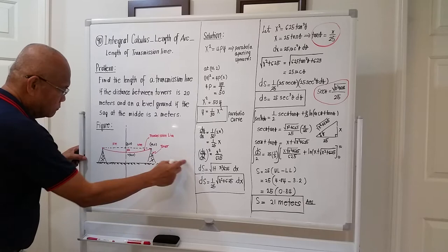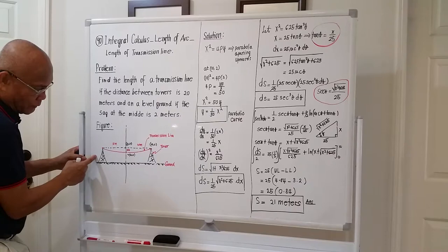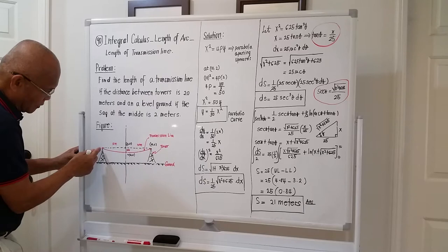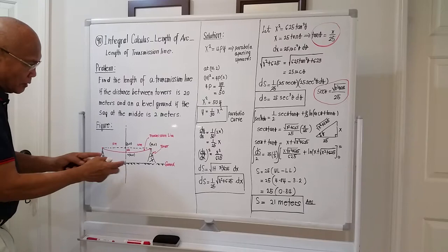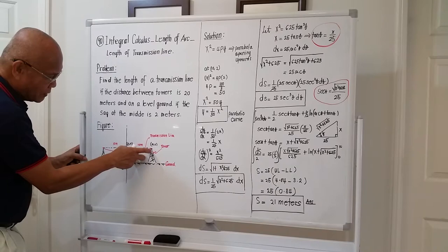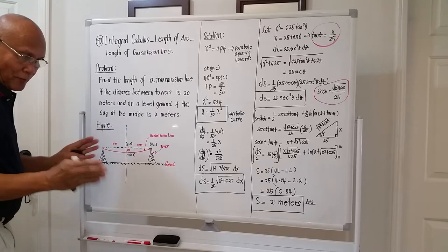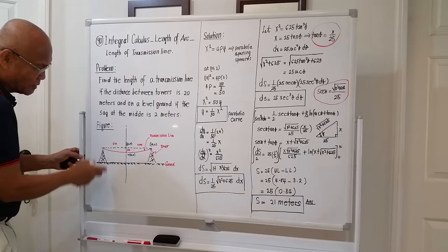Let's bring out the figure. We have the ground level, the first transmission tower, and the second transmission tower. If we connect the transmission line between these two towers, that is the transmission line — the one in red. The distance between the two towers is 20 meters, so this side is 10 meters and this side is 10 meters, considering the symmetry of the middle portion.